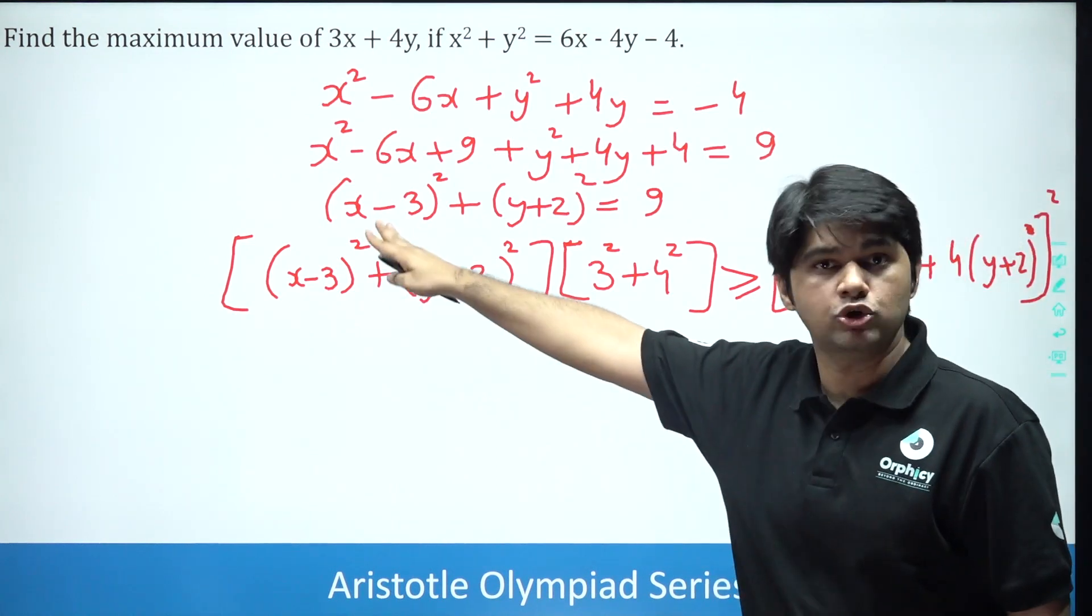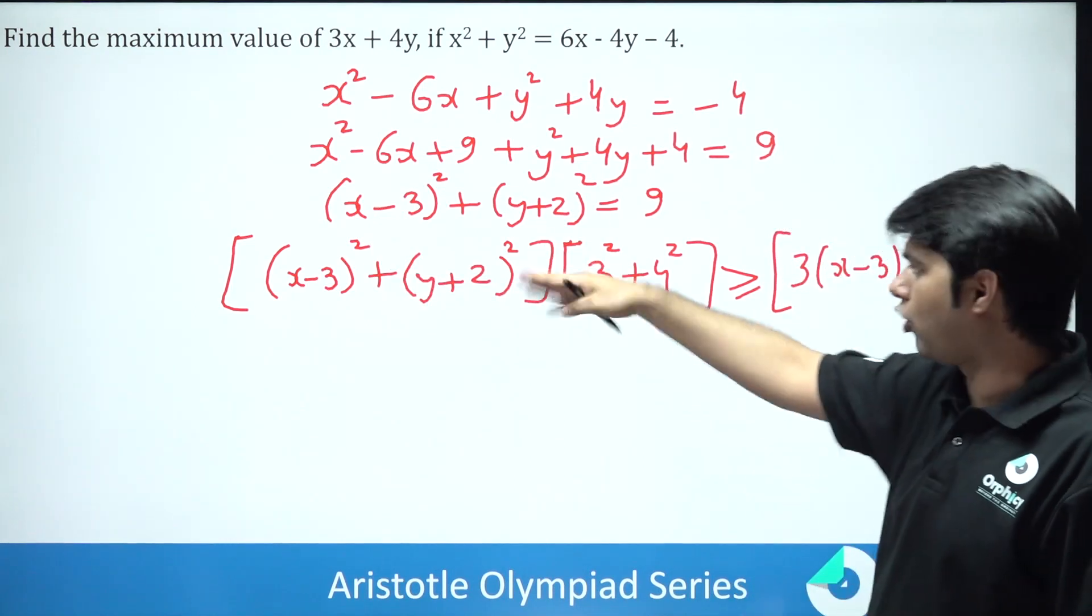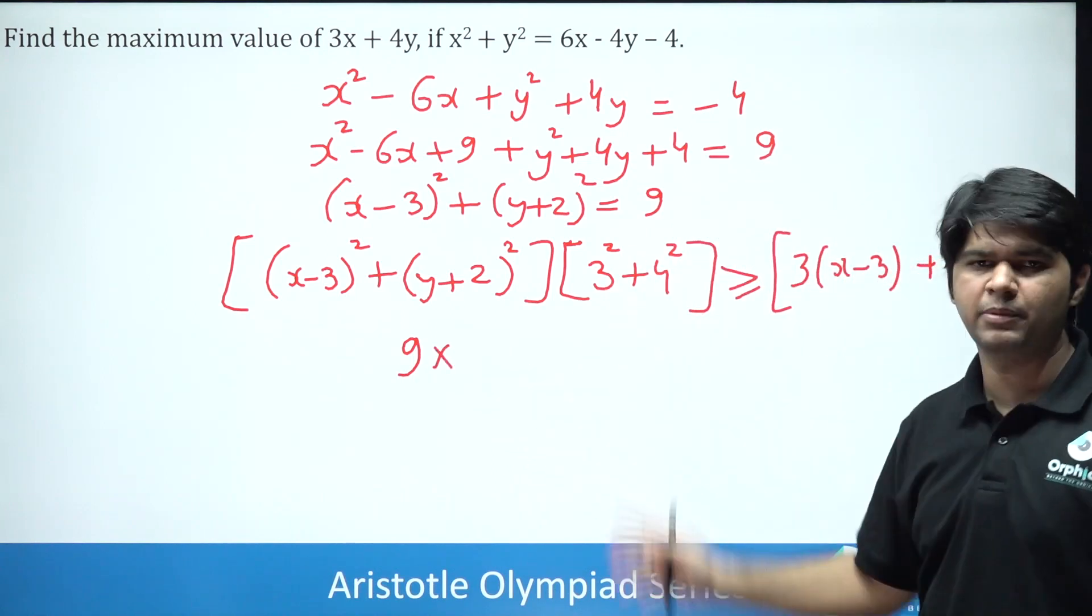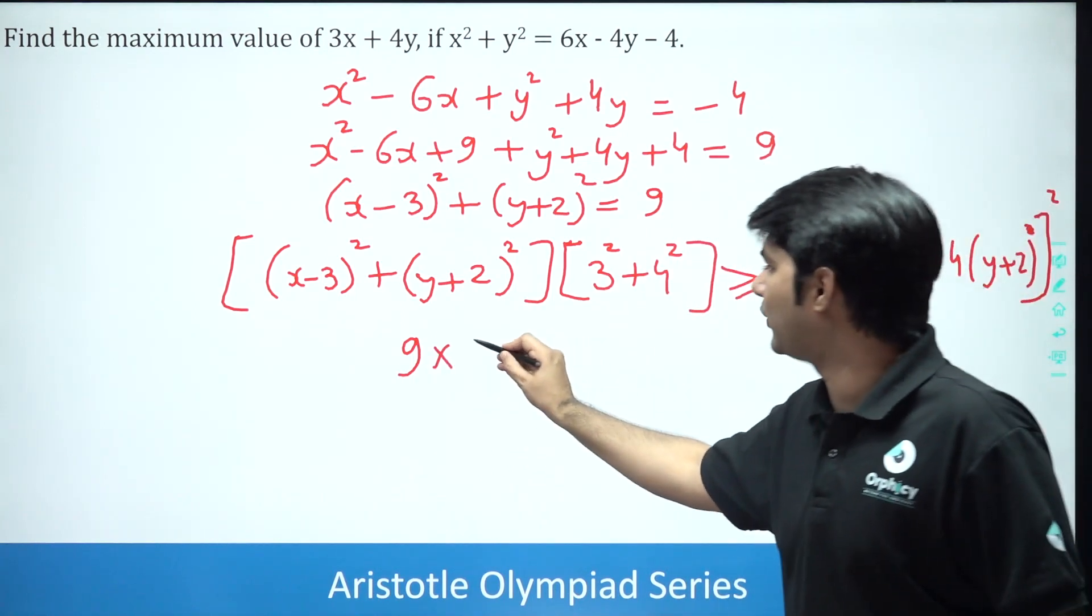Now x minus 3 the whole square plus y plus 2 the whole square, we already know that is 9. So here we will keep 9 here. Into 3 square plus 4 square we know is 5 square. So this will be 25.